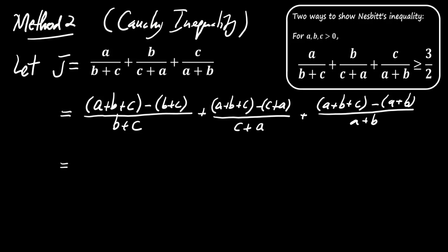We do the same for the other terms, which gives us J equals A plus B plus C over B plus C minus 1 plus A plus B plus C over C plus A minus 1 plus A plus B plus C over A plus B minus 1.